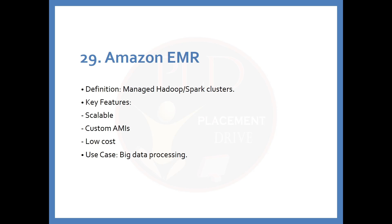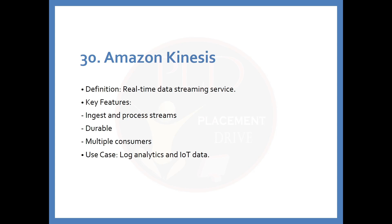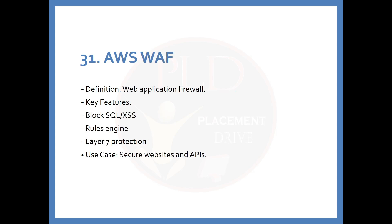The 29th service is Amazon EMR. The definition is: managed Hadoop or Spark clusters. Key features include scalability, custom AMIs, and low cost. The use case is big data processing. The 30th service is Amazon Kinesis. The definition is: a real-time data streaming service. Key features include stream ingestion and processing, durability, and multiple consumers. The use case is log analytics and IoT data.